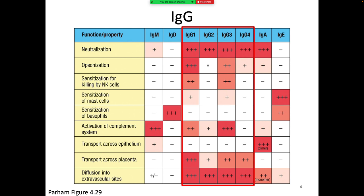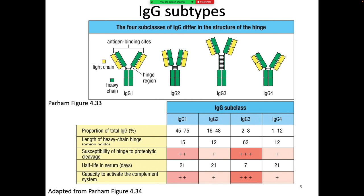The IgG subclasses have somewhat different functions. They're all great neutralizers; some can opsonize, some are the only ones that can sensitize NK cells for ADCC, and some are activating complement. The different IgG subtypes largely vary based on the length of their hinge region, which dramatically changes how long they persist in serum and how easy they are to degrade. IgG3 has a super long hinge region and also sticks around for the lowest amount of time because proteases can easily clip that extra long region.